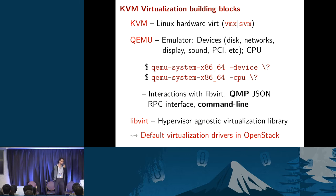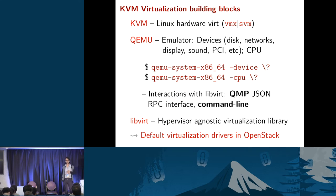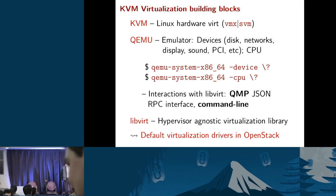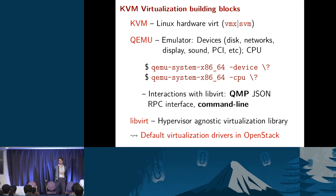KVM is the kernel module that's part of the Linux kernel and is the popular virtualization mechanism. QEMU does all the device emulation — disks, sound, PCI, etc. It supports about 17 CPU architectures. The commands shown will enumerate all the devices KVM supports and the CPU architectures it emulates; the QEMU command line is really quite complex.